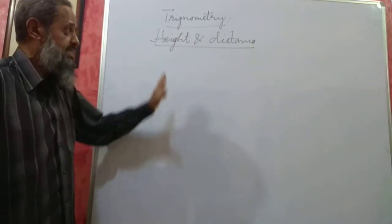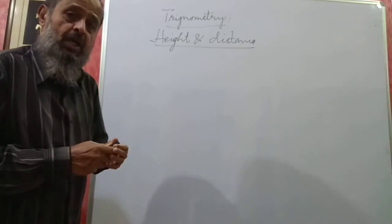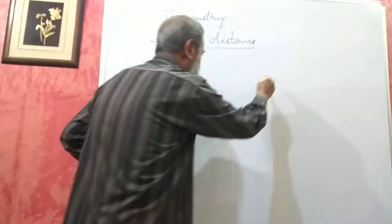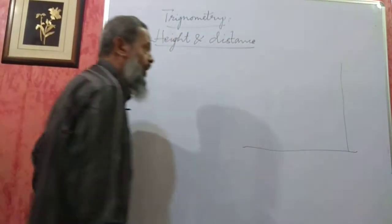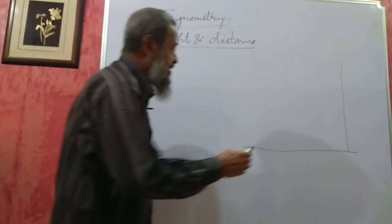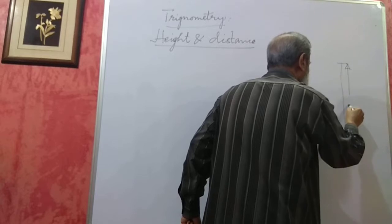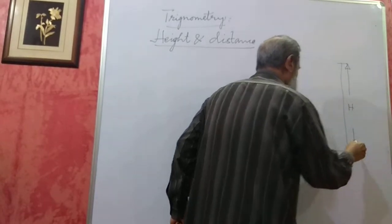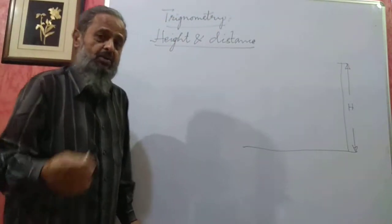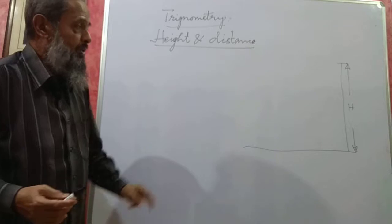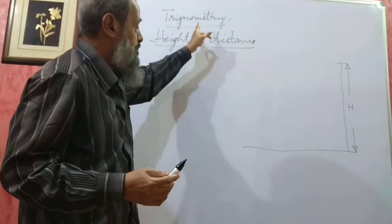So this is a chart. Now, what is Height and Distance? Suppose we have a tower and we want to know the height of this tower — maybe a tower, a pole, a cliff, or a TV tower like the one we have in Bangalore. Without actually climbing or without using a tape, I can find the height with the help of trigonometry.